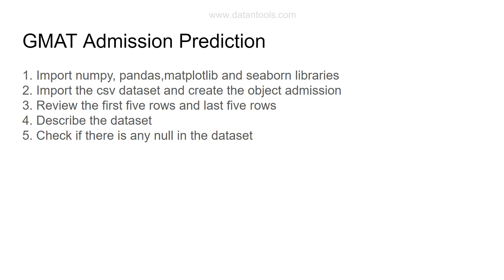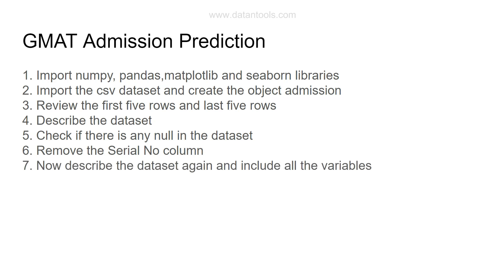You need to know the function to check if the dataset has any null values. Then remove the serial number column, as it has no relevance to the analysis. After removing it, describe the dataset again. This time, if any values are missing, understand the parameter that includes all variables versus leaving it empty, and the difference between those two approaches.